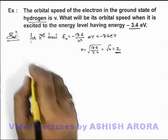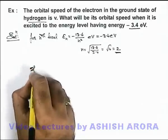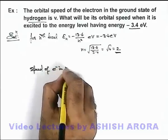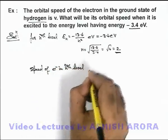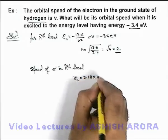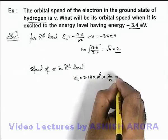Now for the nth energy level, the speed of electron can be directly obtained. We can write speed of electron in the nth level as vn = 2.18 × 10⁶ × z/n meters per second.